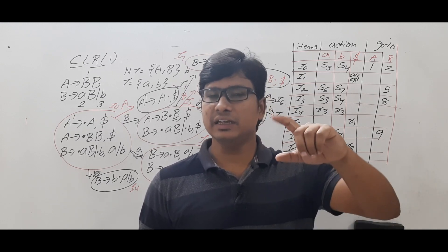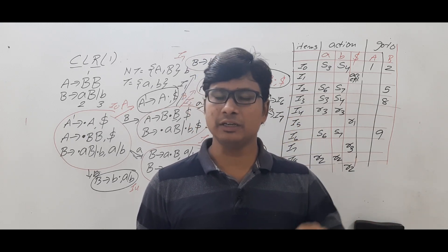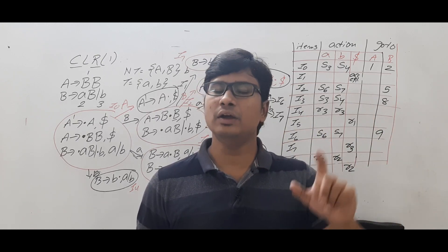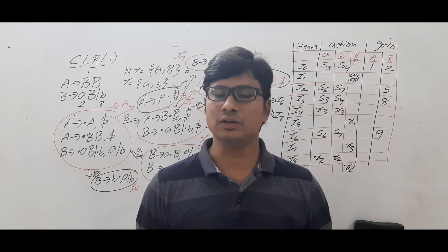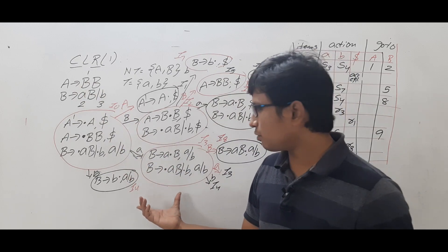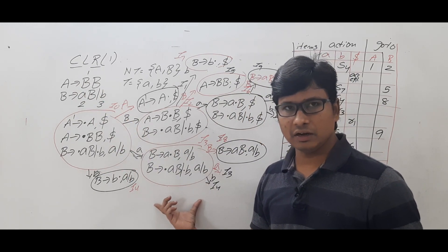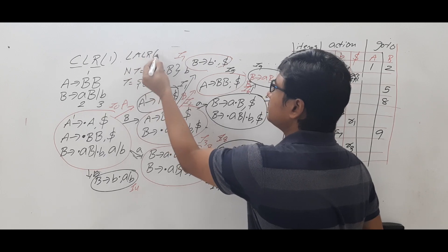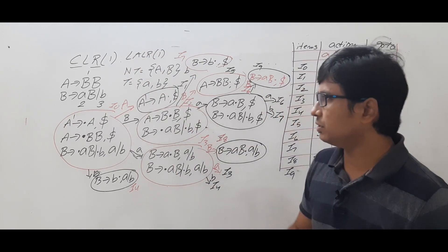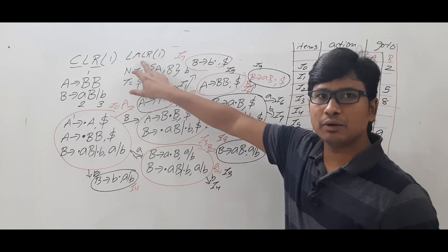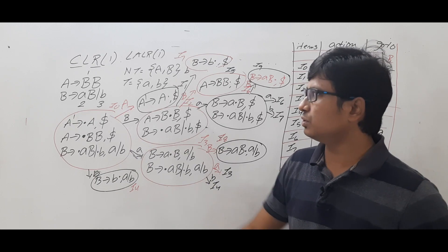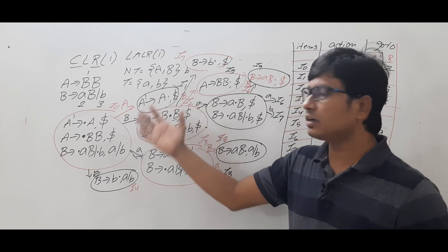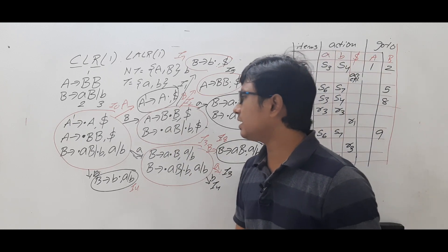For LALR(1) and CLR(1) we need to construct the LR(1) items, and similarly for LR(0) and SLR(1) we need the LR(0) items. So for a given grammar, if you construct the LR(1) items you will get the same number of items whether you are building CLR(1) or LALR(1). That is why I did not erase and reconstruct them.